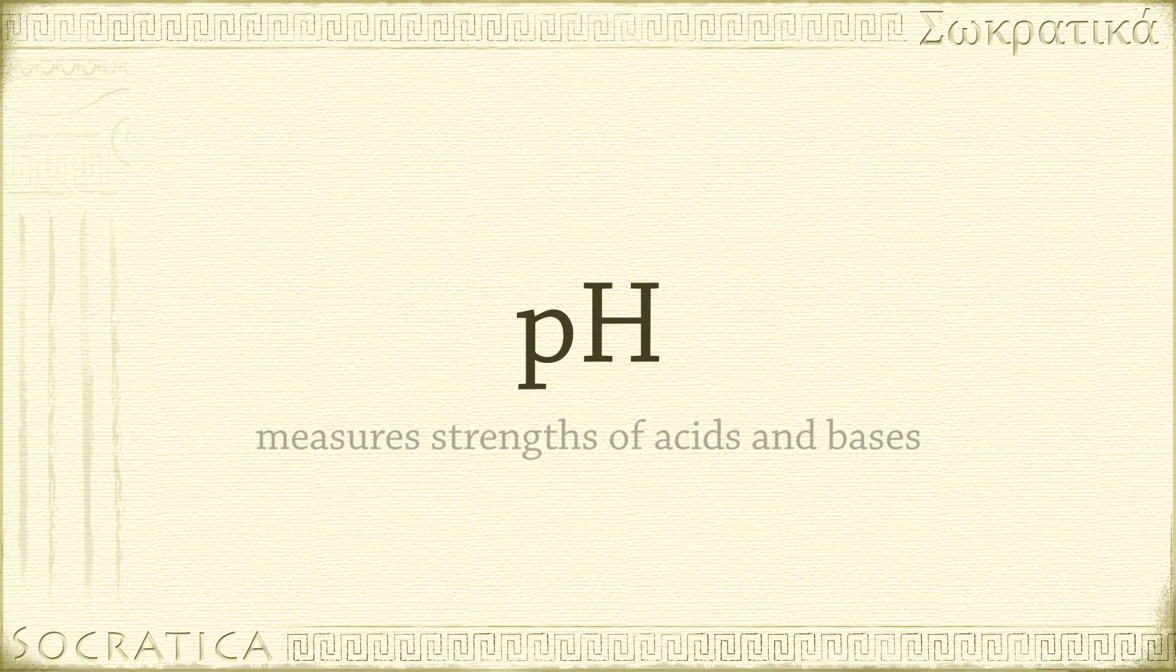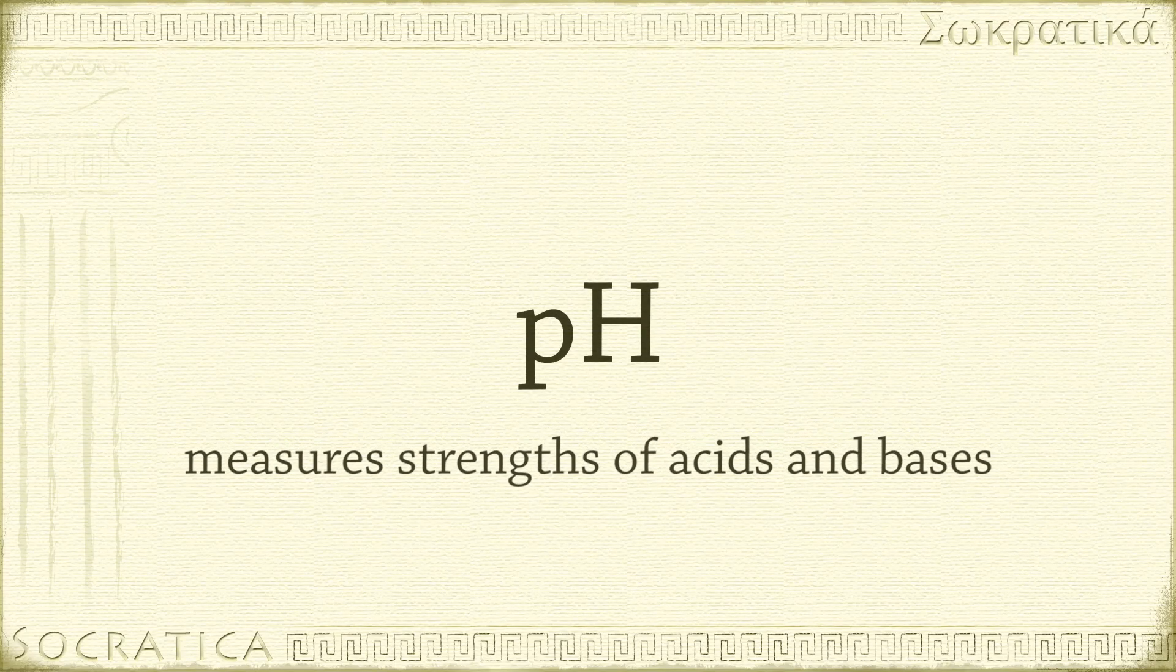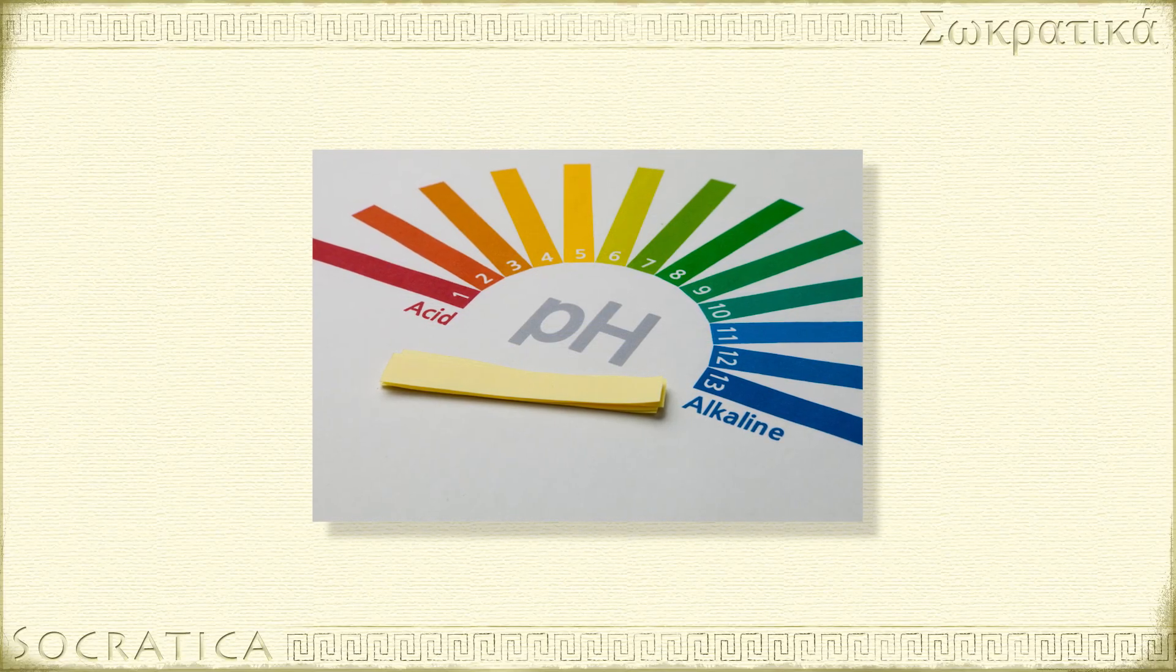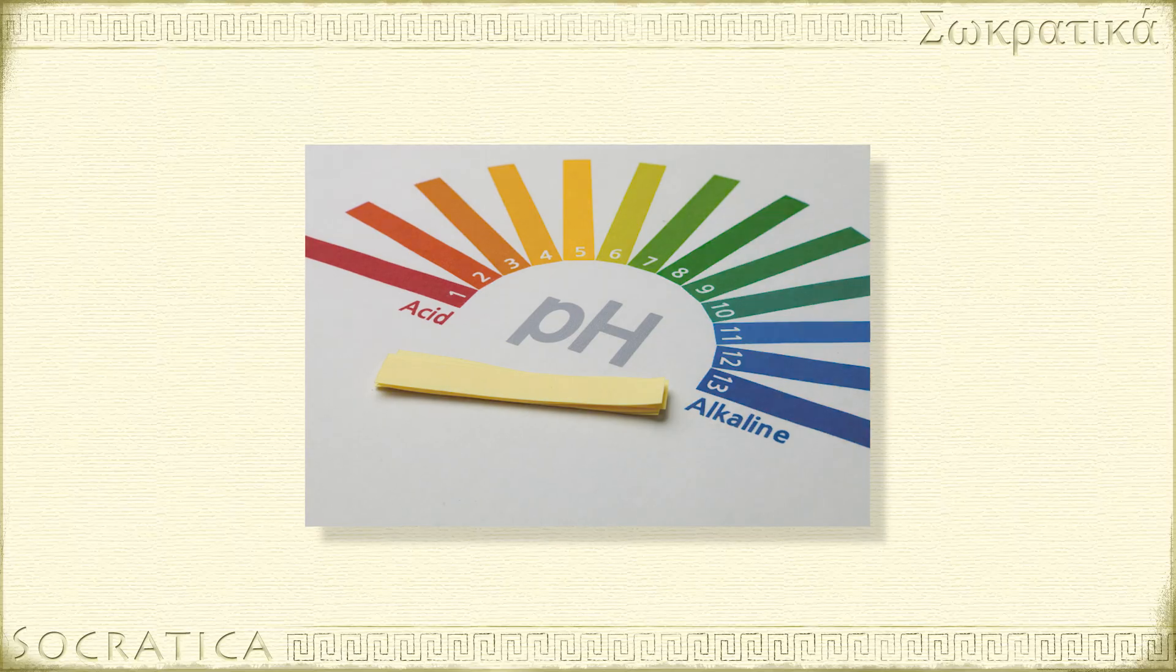pH is a way to measure the strengths of acids and bases. In the lab, you might use pH paper to quickly tell whether a solution is acidic or basic, based on a color change.